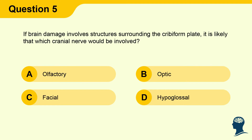Question 5: If brain damage involves structures surrounding the cribriform plate, it is likely that which cranial nerve would be involved? A) Olfactory, B) Optic, C) Facial, D) Hypoglossal.